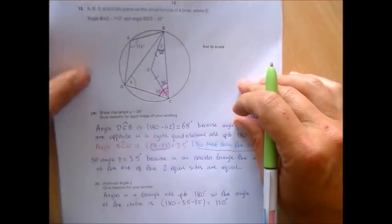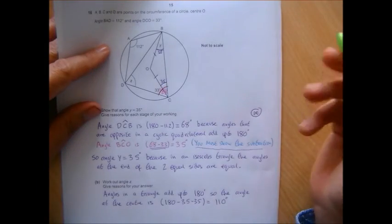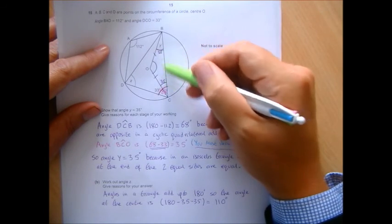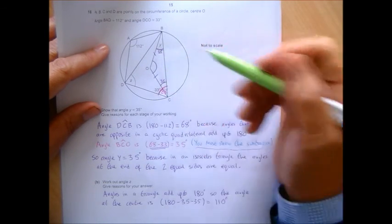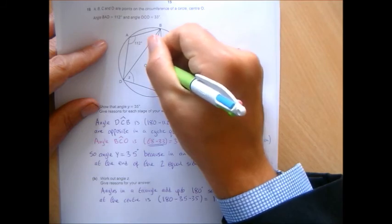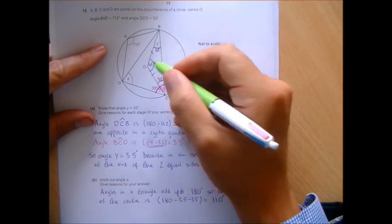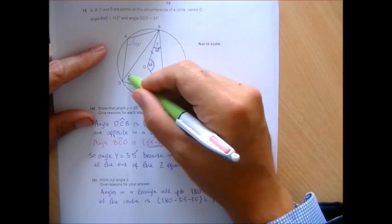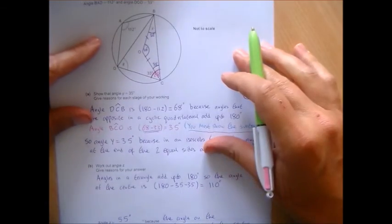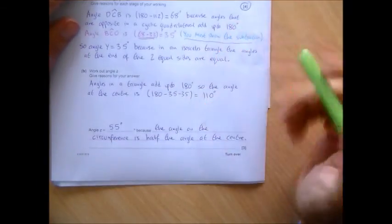Part B: work out the size of angle Z. To work out angle Z, we first need to work out the top angle of the isosceles triangle. We know both base angles are 35° and there are 180° in a triangle, so we do 180 take away 35 take away 35, which makes that angle 110°.